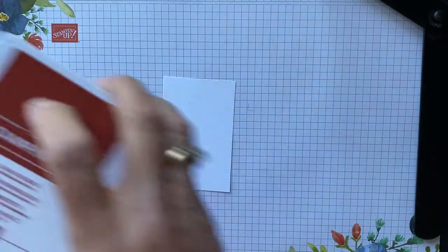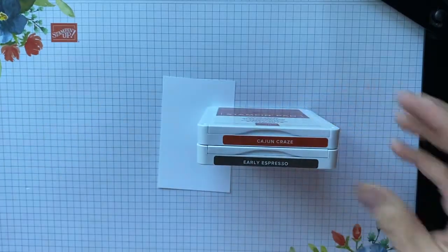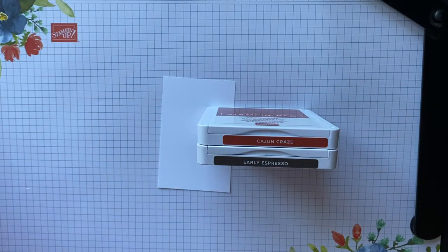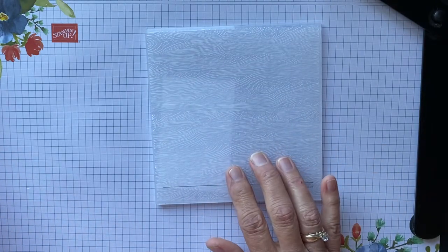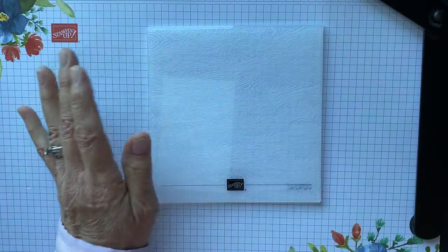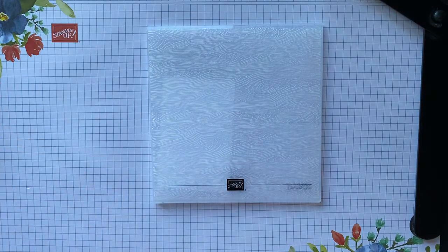We are also going to be using Cajun Craze and Early Espresso ink, and then in the mini catalog we have this beautiful embossing folder. It's actually on page 37 and it's called the Timber 3D embossing folder. Love this.